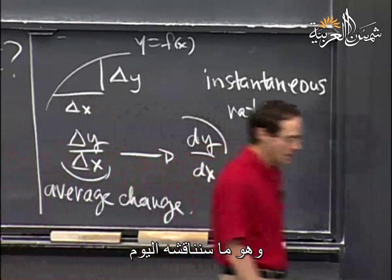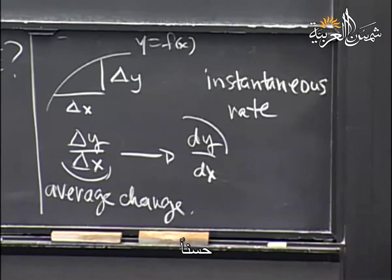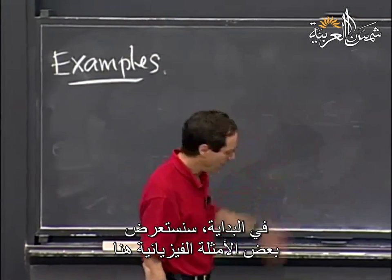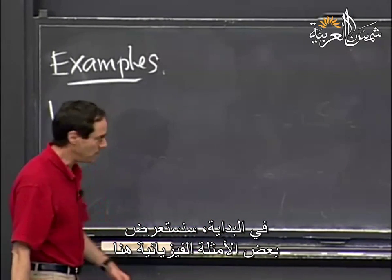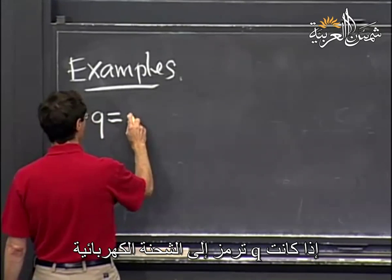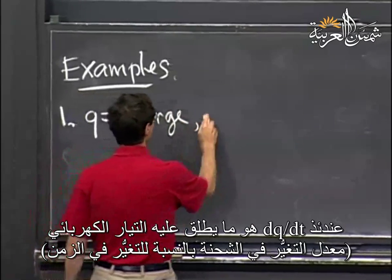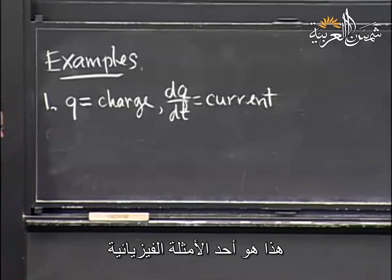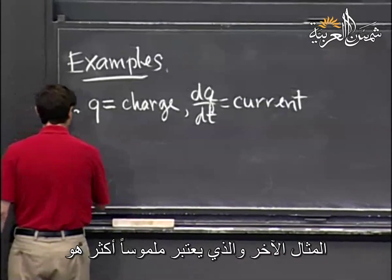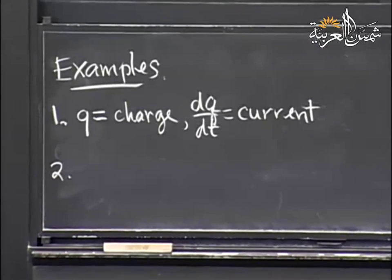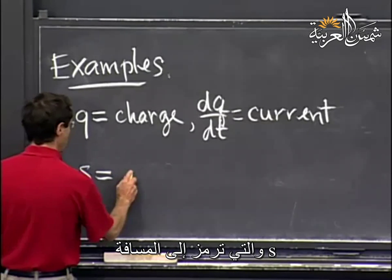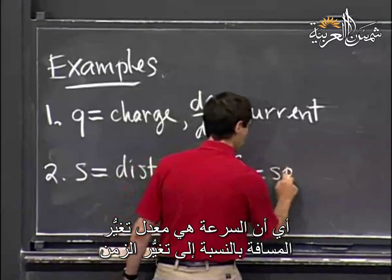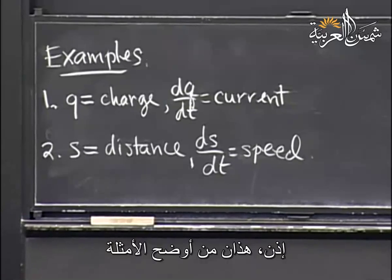Let me give a couple of examples from physics. q is usually the name for charge, and dq/dt is what's known as current. A second example, probably the most tangible one: if s denotes distance, then ds/dt — the rate of change — is what we call speed.